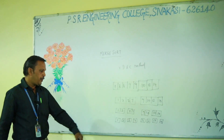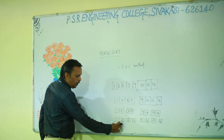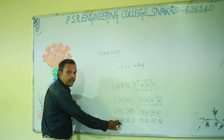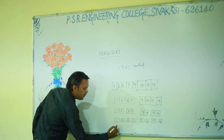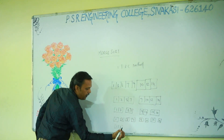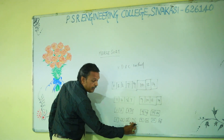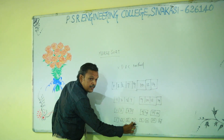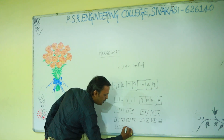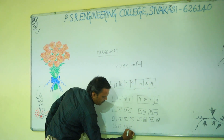Now we do the merge. First of all, compare these two elements 1 and 3. The 1 is smaller and 3 is larger, so that is why we merge them as 1, 3. Then we compare 8 and 7. 7 is less and 8 is large, so that is why we sort them as 7, 8.